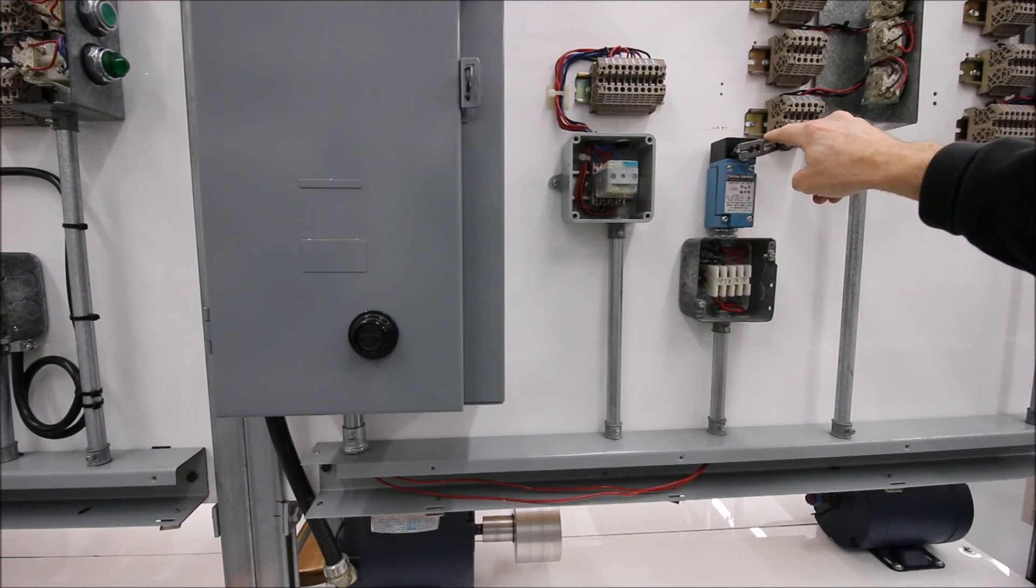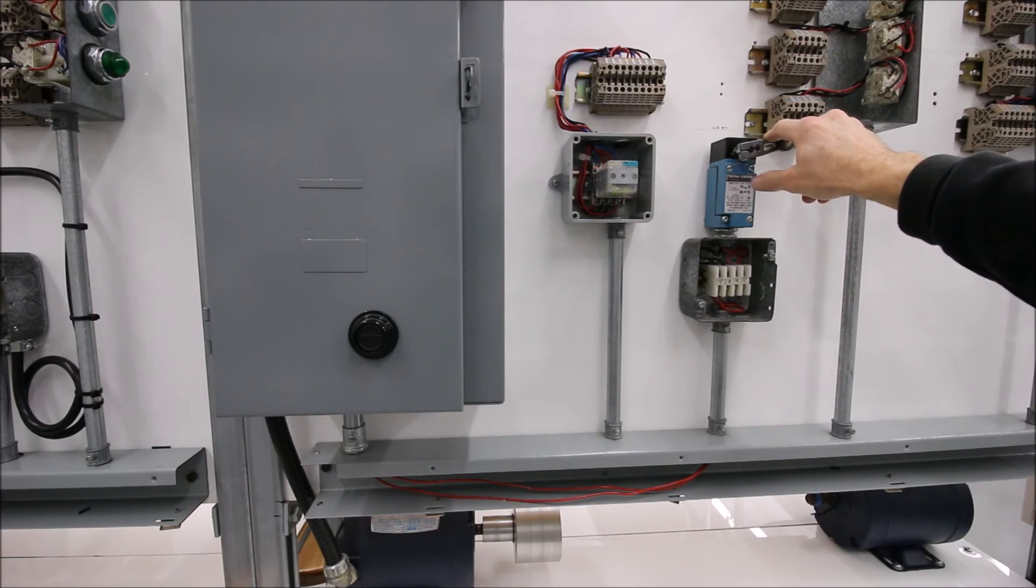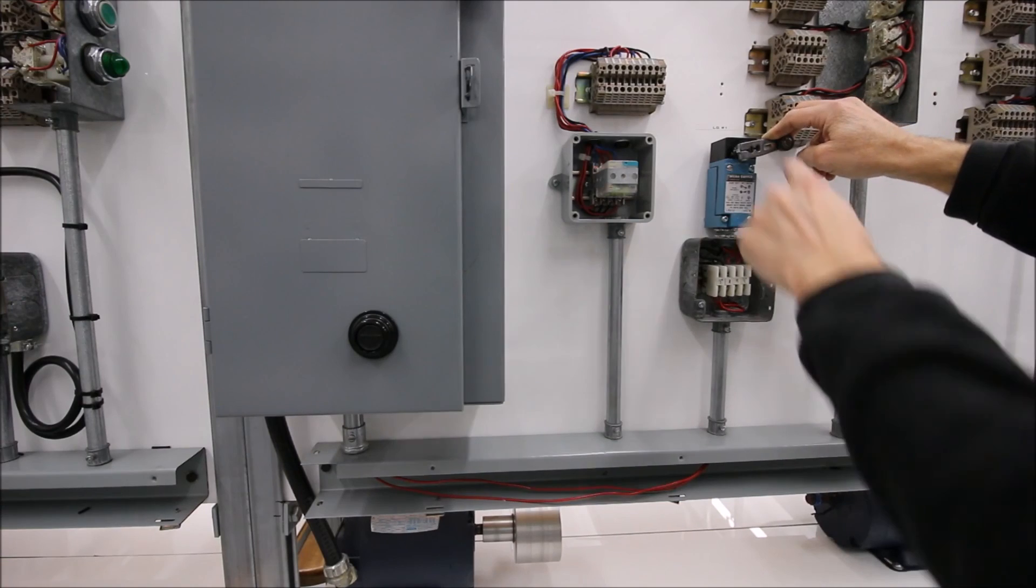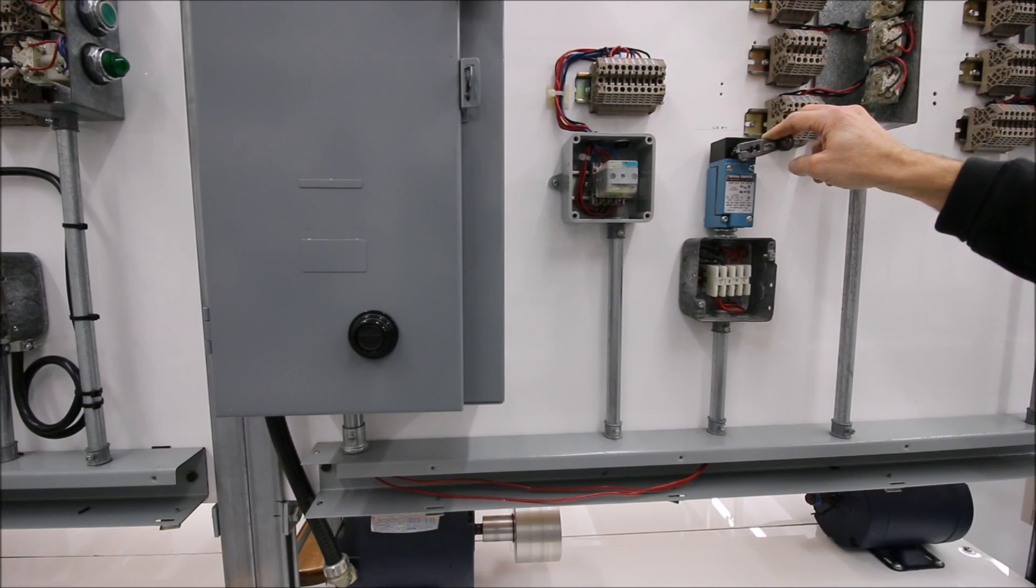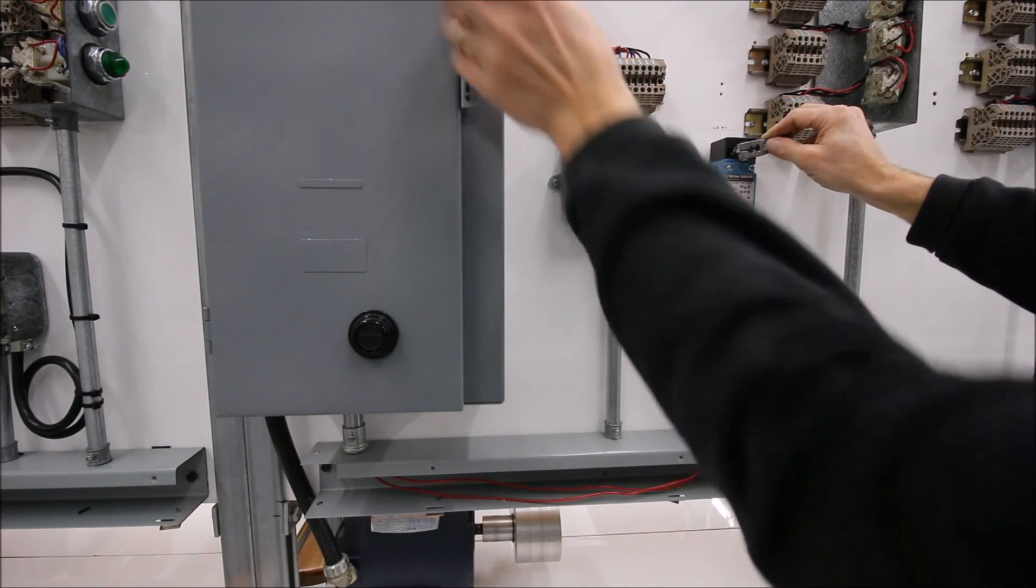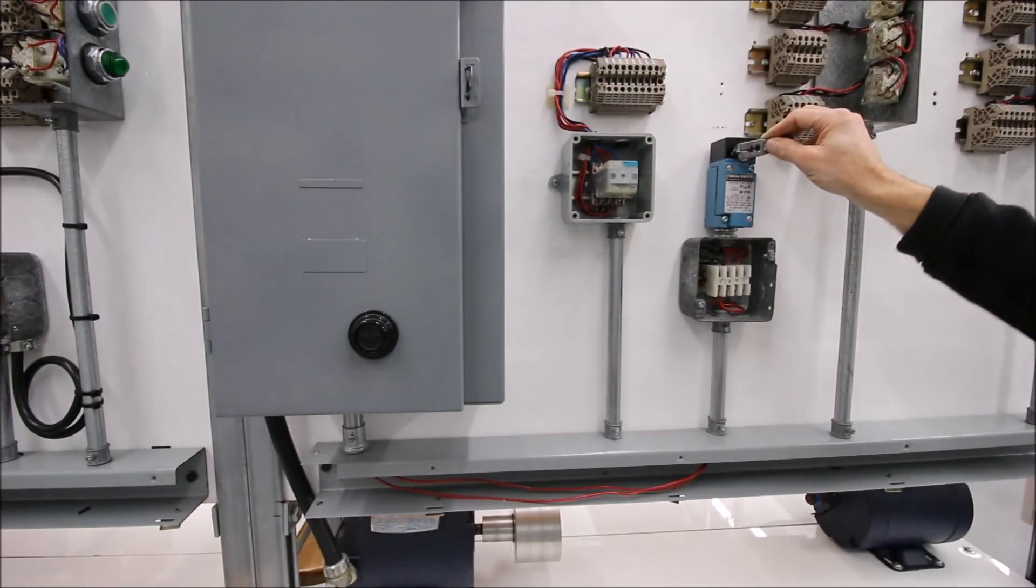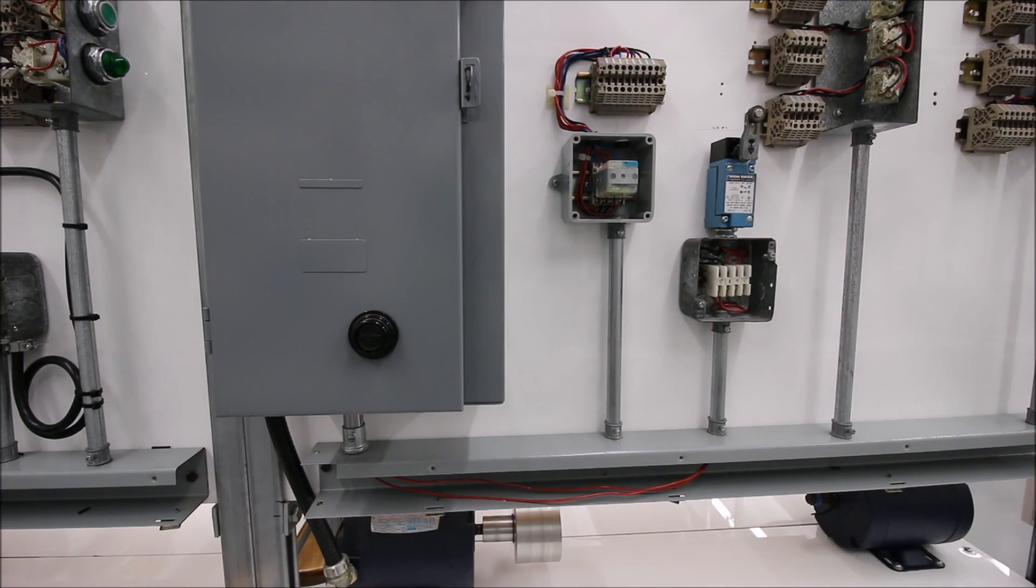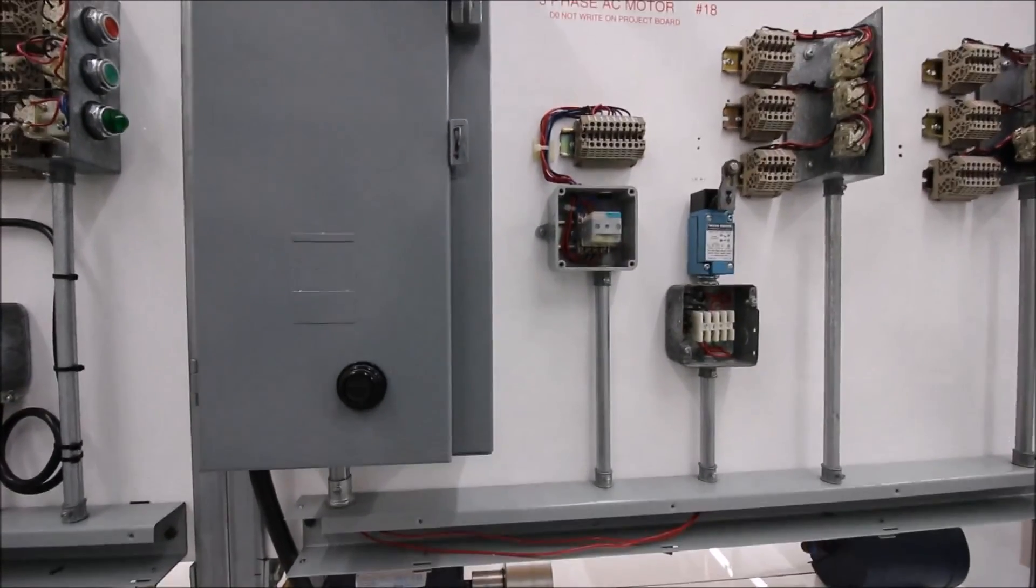As long as that limit switch, or more likely a thermostat or pressure contact, is calling for that pump or that fan to turn back on, it's low voltage release. Then if you have a brownout, the motor turns off. As long as this is still calling for the motor to turn back on, when the power is restored, then the motor goes right back on. Alright guys, hopefully that covers everything for the two-wire. Next video is going to be on the three-wire.